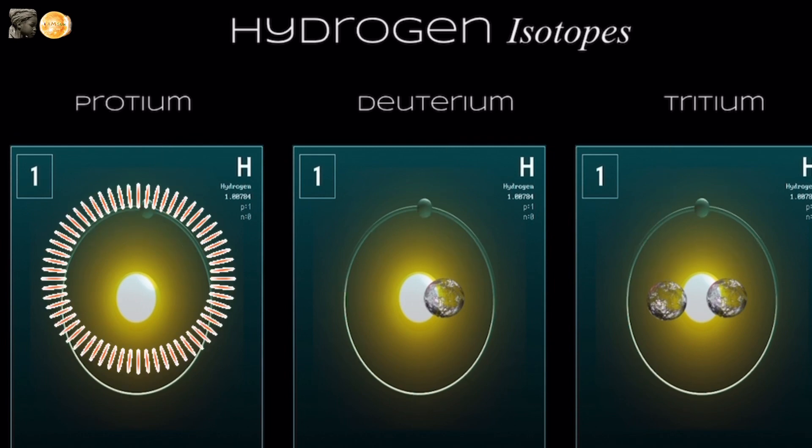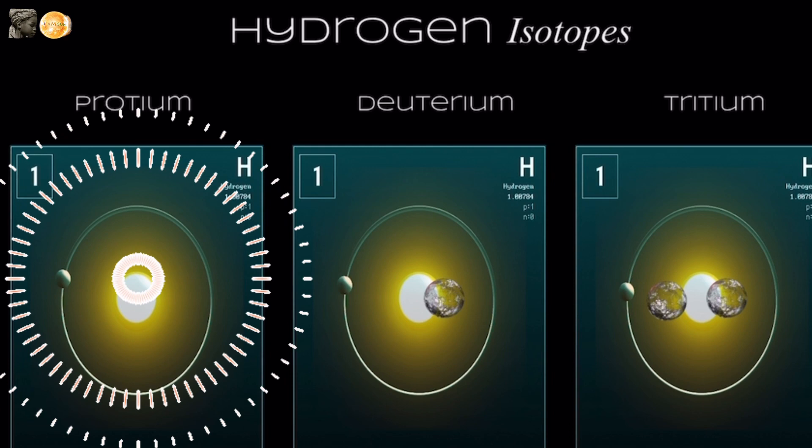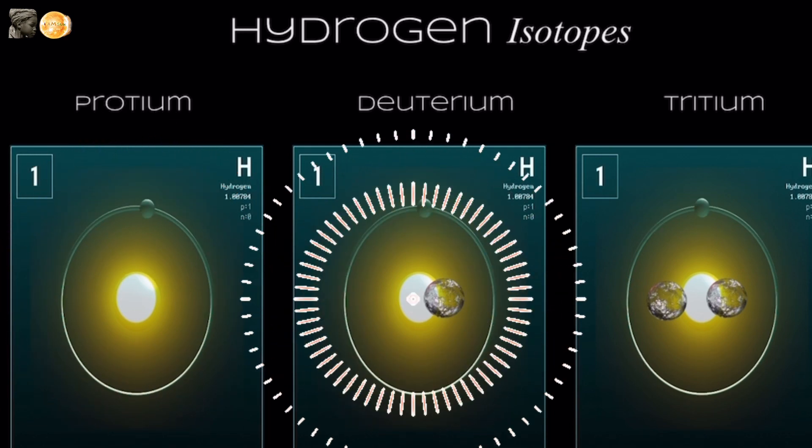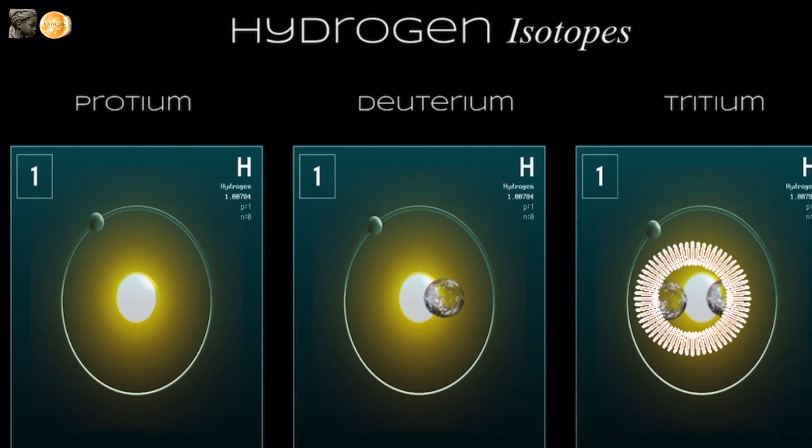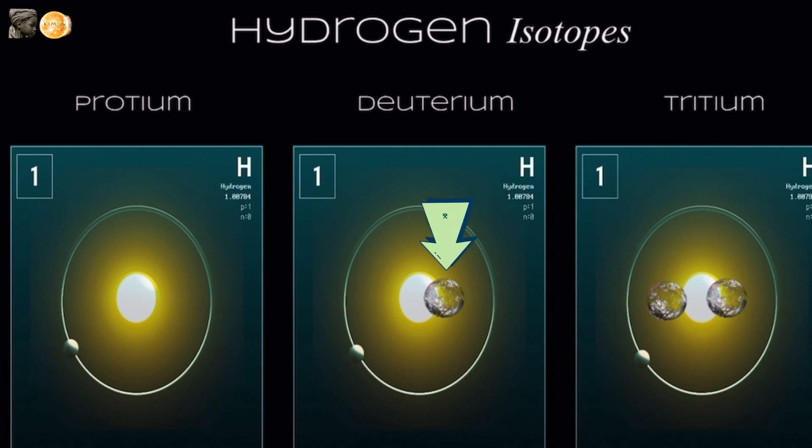This is hydrogen with an atomic number of one ball of positively charged proton. But there are different versions or isotopes of hydrogen. See, here's one version with one neutron in it. It's called deuterium.